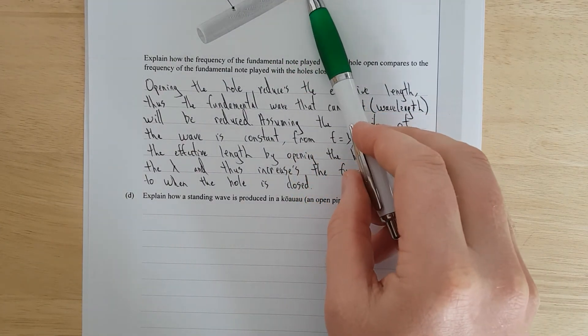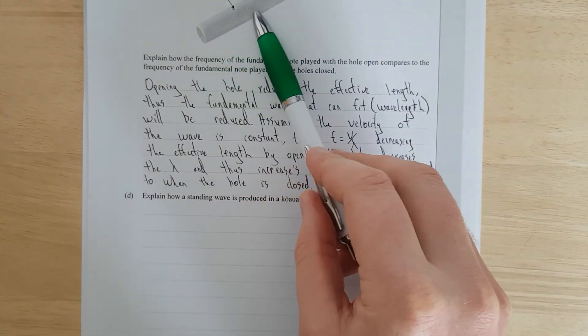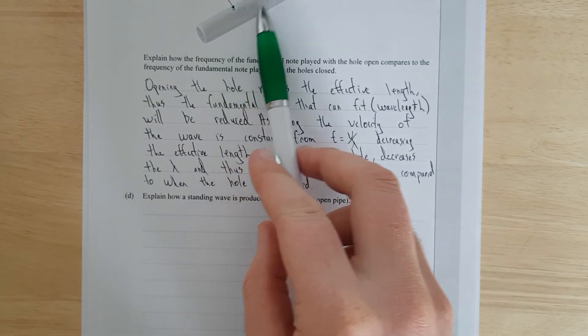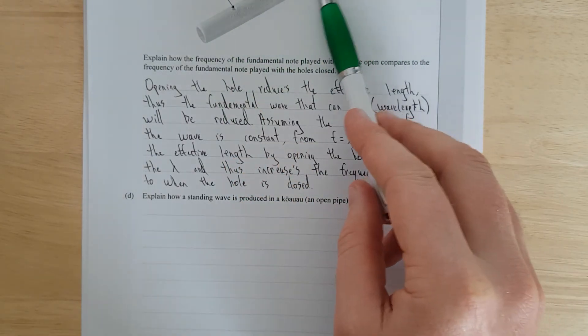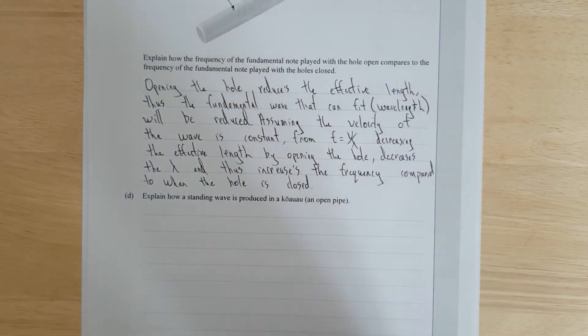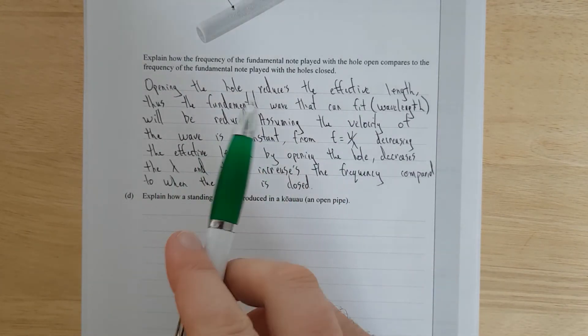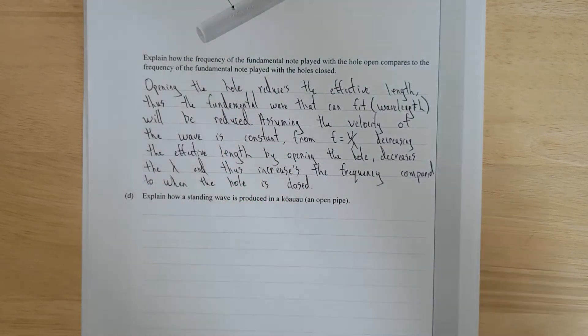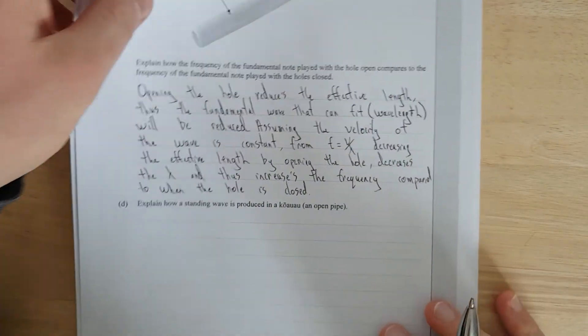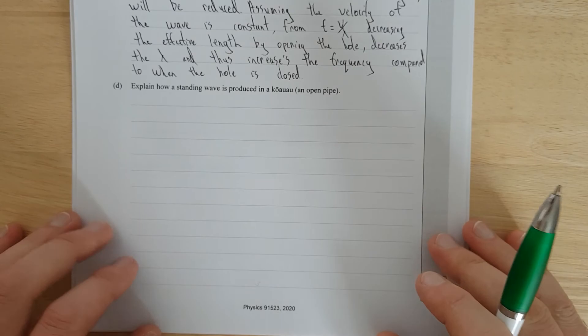So the reflected wave will come back and constructively and destructively will just interfere with the wave that you're still blowing that's going down. That constructive and destructive interference will create spots of anti-nodes and nodes or high and low pressure and you get a standing wave form. Yeah, that's really bad. I'll pause it and write it semi-coherently and hopefully that'll do.